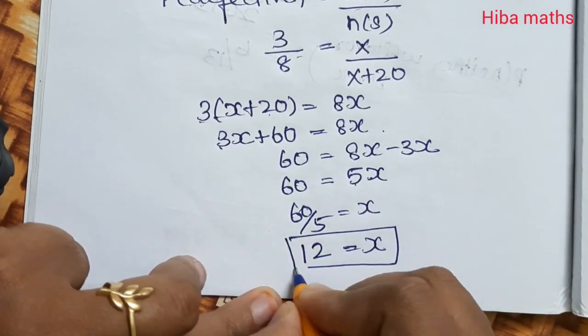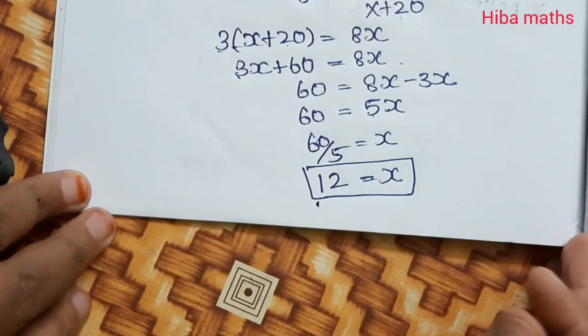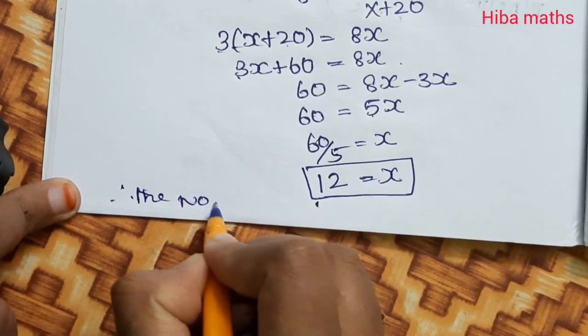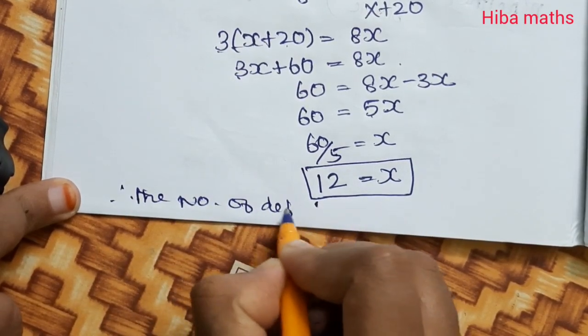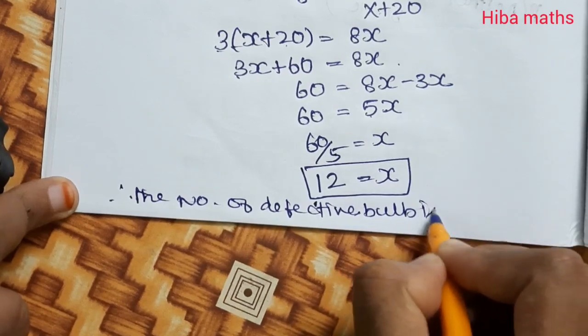So the number of defective bulbs is equal to 12. Therefore, the number of defective bulbs is 12.